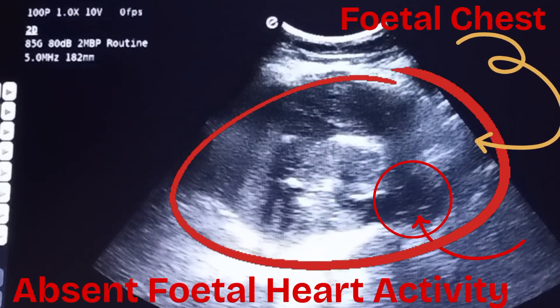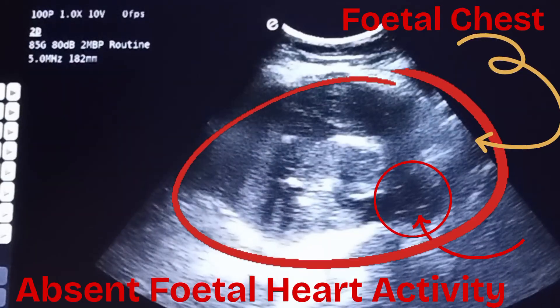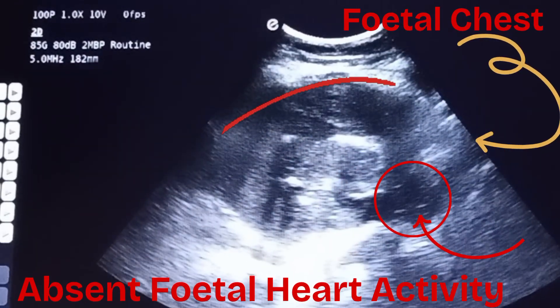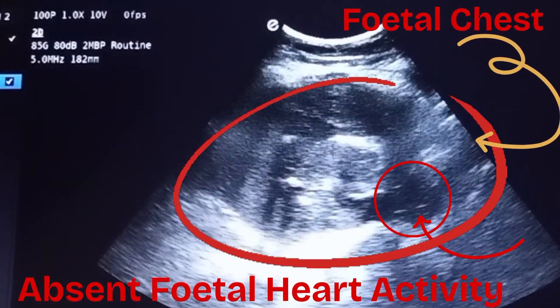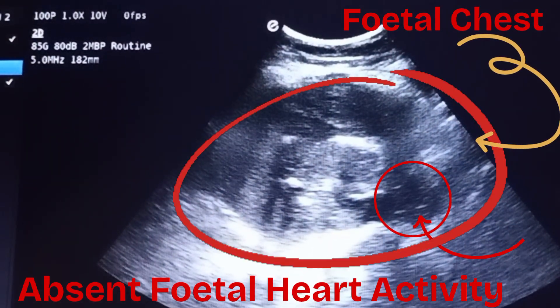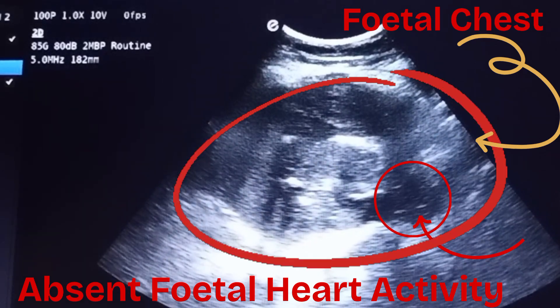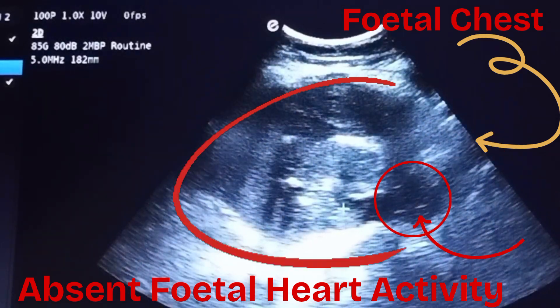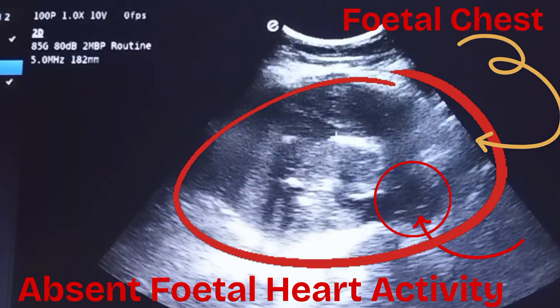Inside the red outline, the fetal chest can be seen, with a yellow arrow indicating it inside the red oval lines. Inside the small red circle, the fetal heart can be seen with a red arrow pointing to it, showing no activity.